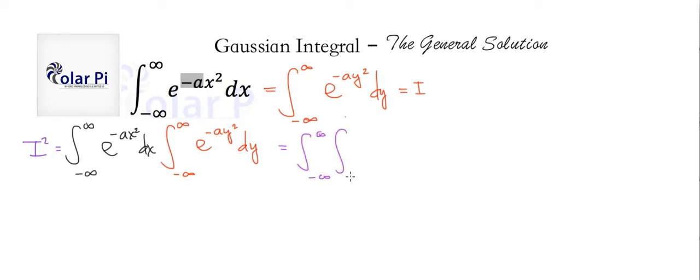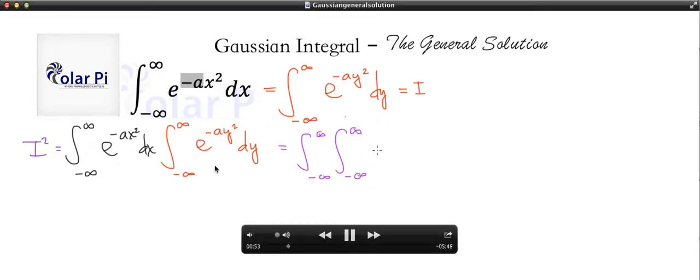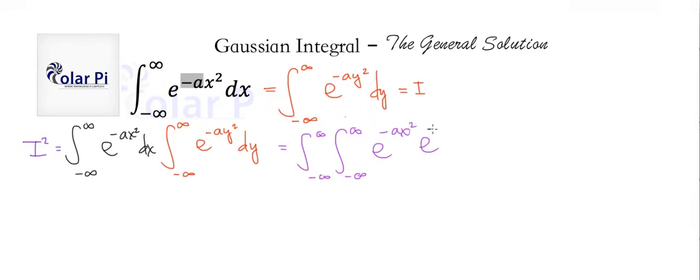All right, so as I said, we could go from product of integrals to a double integral. And then after this, we're going to go to polar coordinates, Royce's coordinates, y'all.